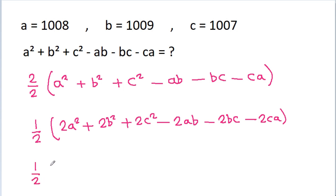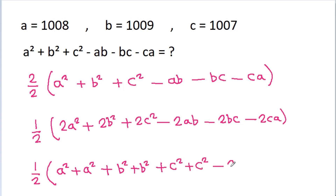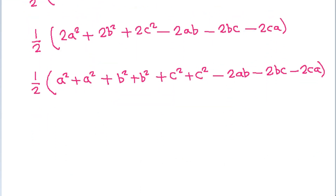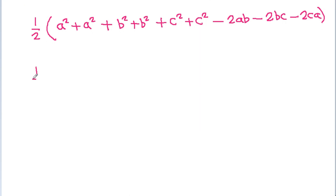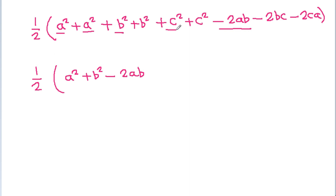And it is 1 by 2 times: 2a squared is a squared plus a squared, 2b squared is b squared plus b squared, plus 2c squared is c squared plus c squared, minus 2ab minus 2bc minus 2ca. Grouping these, we get 1 by 2 times (a squared plus b squared minus 2ab) plus (a squared plus c squared minus 2ca) plus (b squared plus c squared minus 2bc).